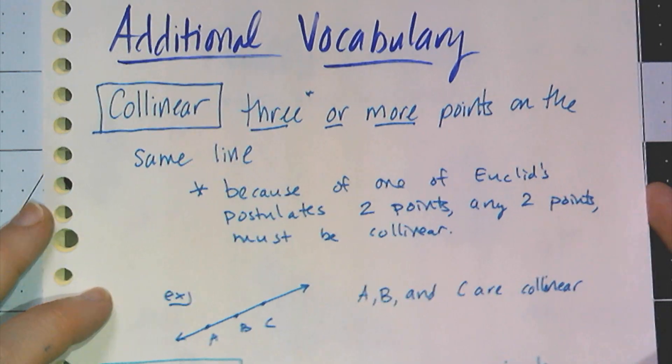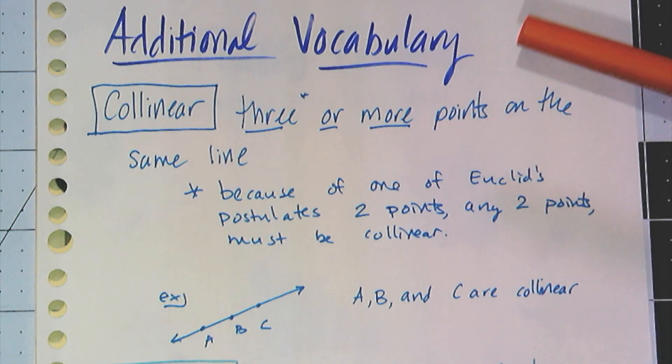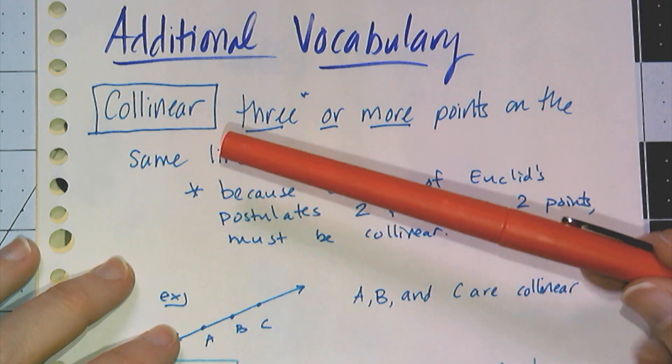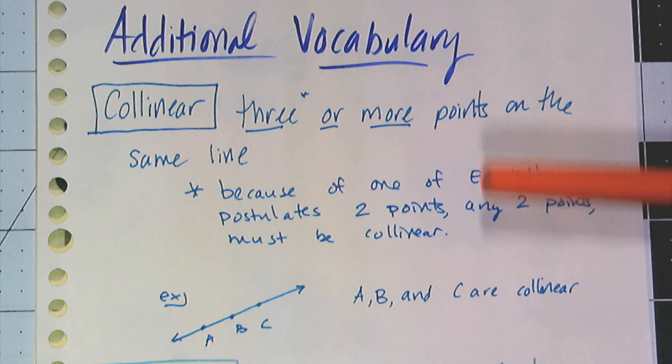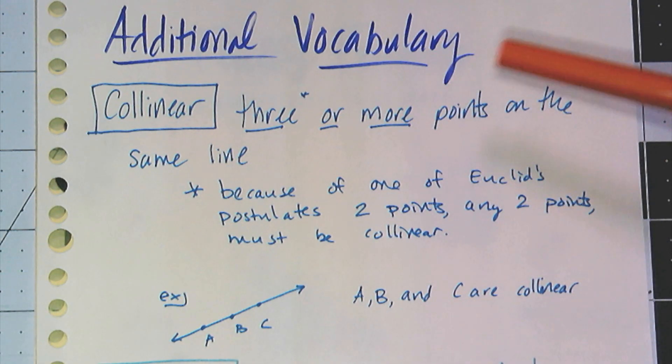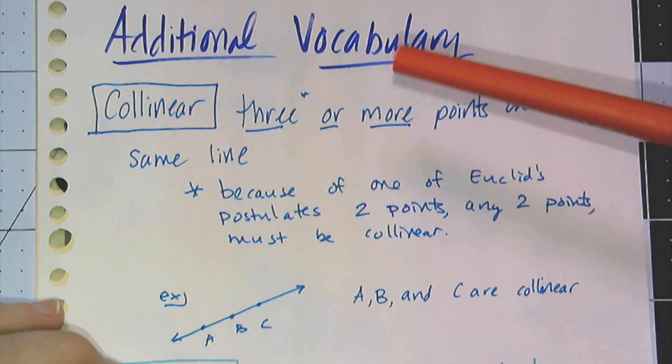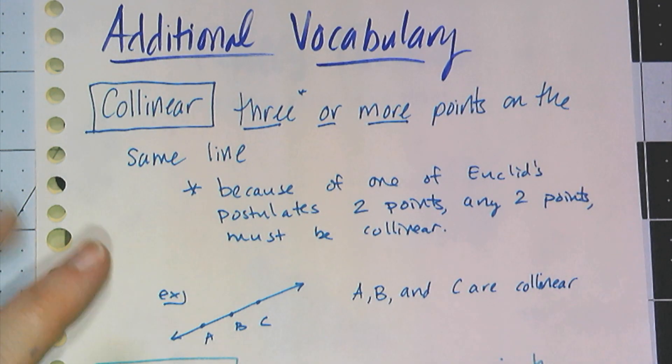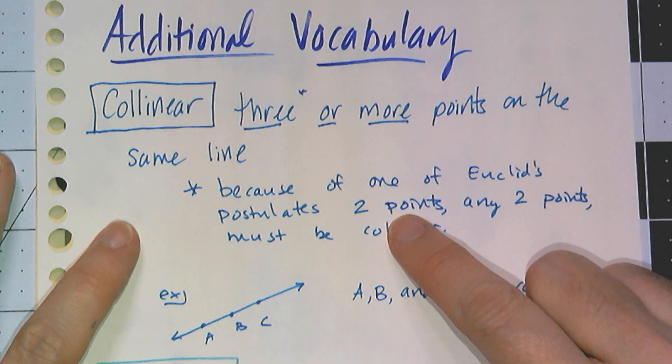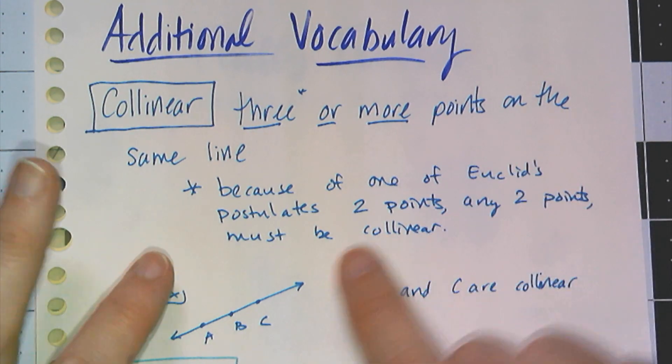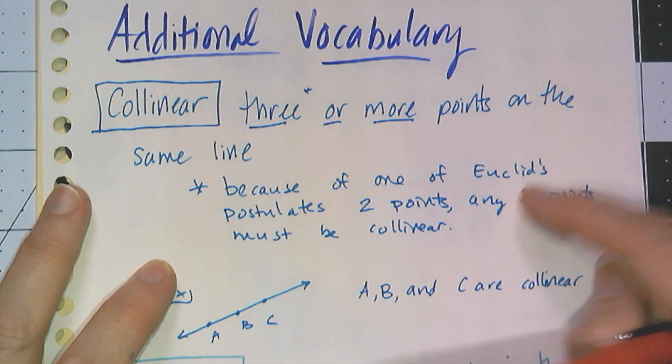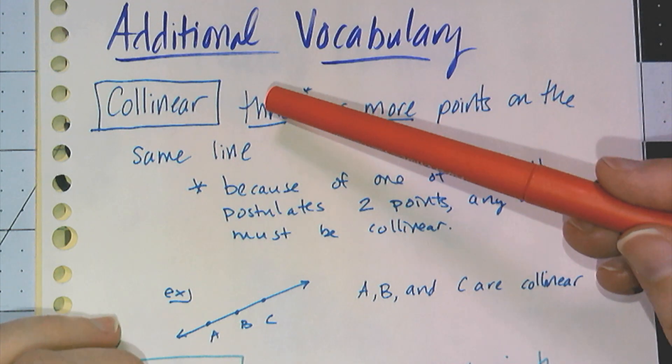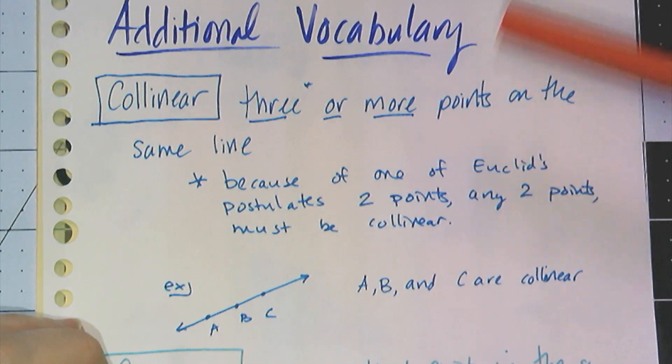We have some additional vocabulary. First, we're going to define collinear. This term should be familiar from Algebra 1. It means three or more points on the same line. I have a star here because one of Euclid's postulates said any two points create a single line that goes through them. So any two points are collinear. The definition specifically states three or more points on the same line.